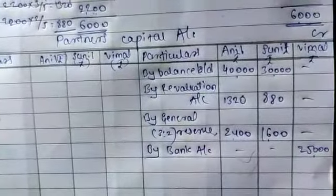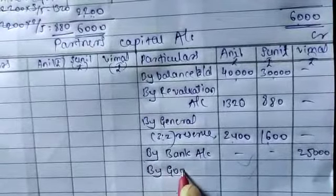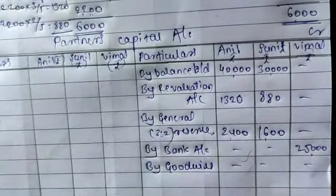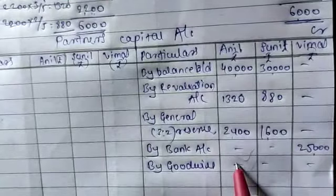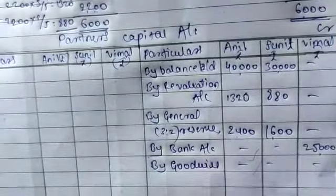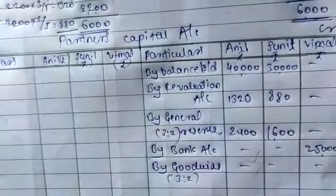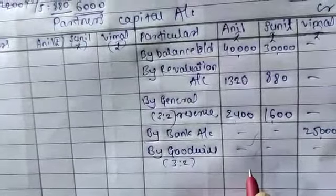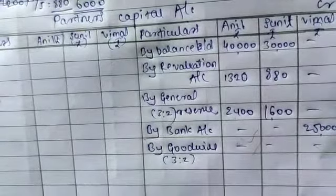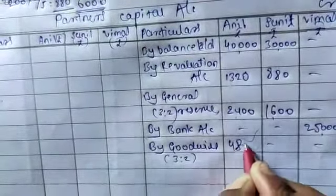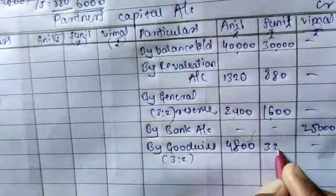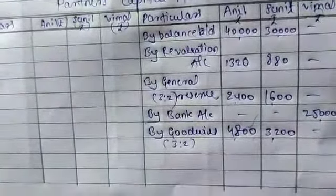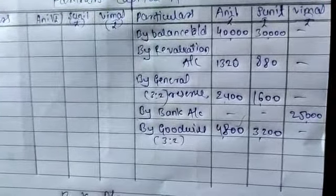The new partner also brings goodwill, so that goodwill amount must also be entered here. The goodwill amount of ₹8,000 should be distributed among the old partners in the old sacrificing ratio. That gives Anil ₹4,800 and Sunil ₹3,200, totaling ₹8,000.